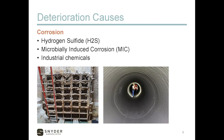One of the biggest causes of deterioration in our sewers is hydrogen sulfide, either directly emanating from the wastewater or compounded by microbial-induced corrosion — MIC, as it's known — which is the bacteria that grow on the pipe walls that increase the corrosion. Industrial chemicals can also cause corrosion in our pipes, things we don't know are getting flushed.